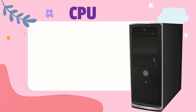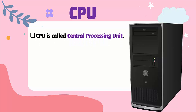Now this is the second part of the computer, that is the CPU. CPU is known as Central Processing Unit. Central Processing Unit means this is the unit which processes all the information that we are giving to a computer. It analyzes the information and then it shows it on the monitor.